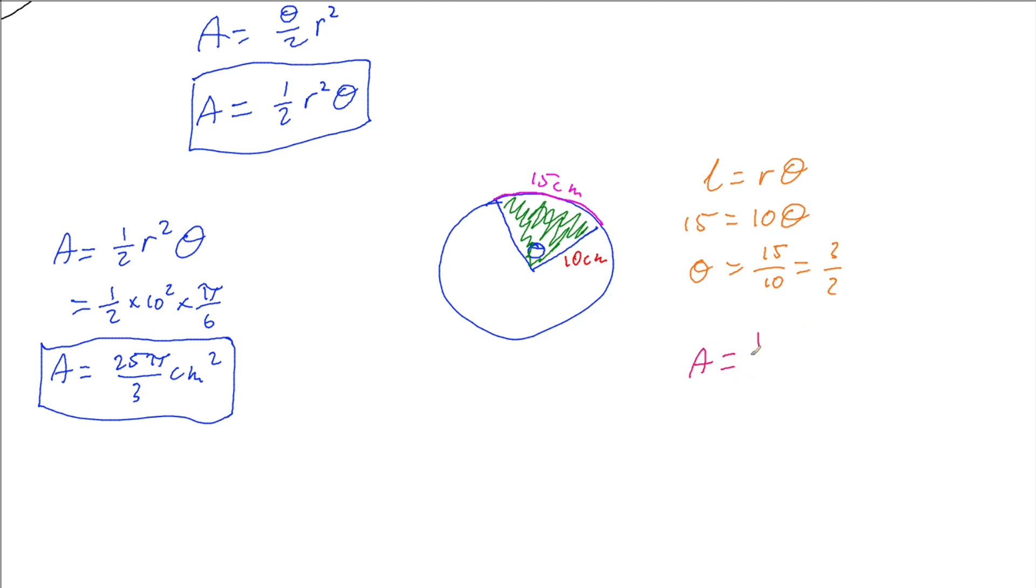And so we can go to our area rule, which is a half times the radius squared times our angle. And so we've got a half times our radius of 10 squared times our angle of 3 over 2. And so working this out, 10 squared is 100, half of that is 50, half again is 25, times 3 is 75 centimeters squared. And there's our area.